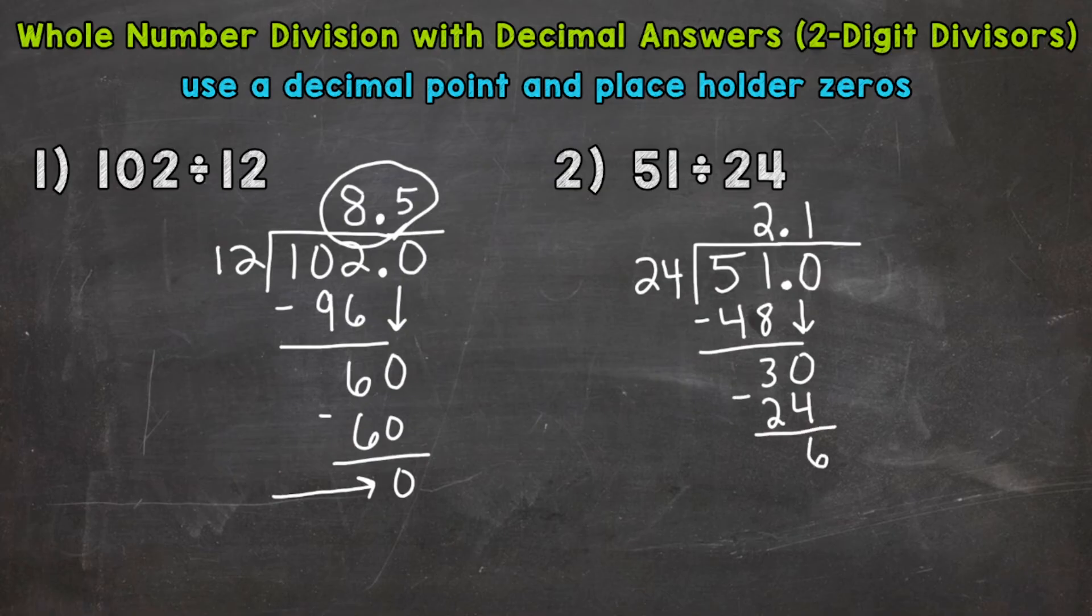So again, we need to go until we get a clean cut zero. So let's use another placeholder zero that we can bring down and continue. Bring that zero down. We have 60 divided by 24. Two groups of 24 gives us 48. Three groups of 24 is 72. So it's only going to be 2. 2 times 24 is 48. Subtract, and we get 12.